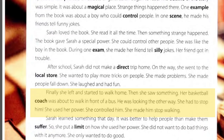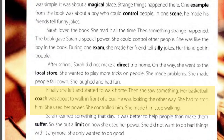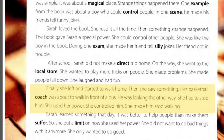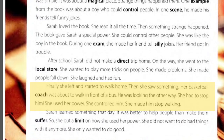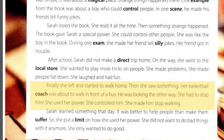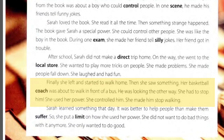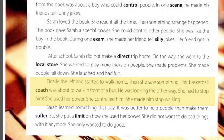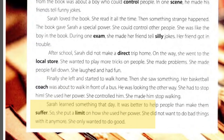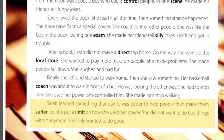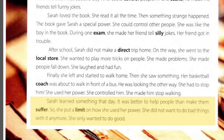Then she saw something. Her basketball coach was about to walk in front of a bus. He was looking the other way. She had to stop him. She used her power — she controlled him and made him stop walking. Sarah learned something that day: it was better to help people than make them suffer.